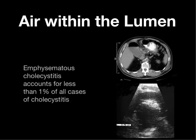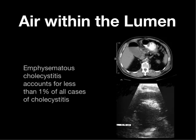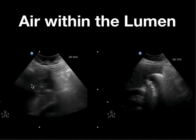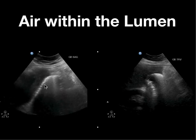What about air within the lumen? Air in the wrong place is never good. Emphysematous cholecystitis accounts for less than 1% of all cases, but these are usually more advanced cases and these patients can be sicker. On CT you can see a large amount of air anteriorly within the gallbladder. On ultrasound you can see multiple echogenic areas with posterior reverberations, all consistent with the presence of air. The intern scanning was having a hard time identifying the gallbladder and assumed the dirty shadowing and reverberations in that area were just bowel gas.